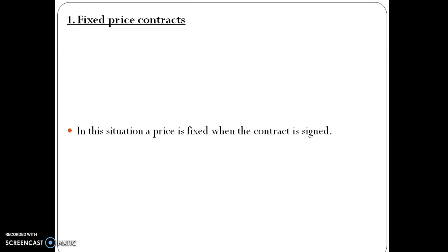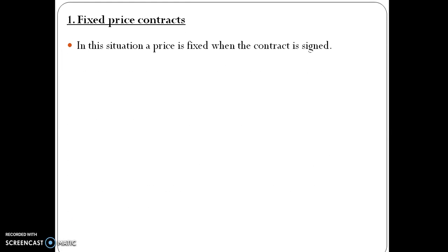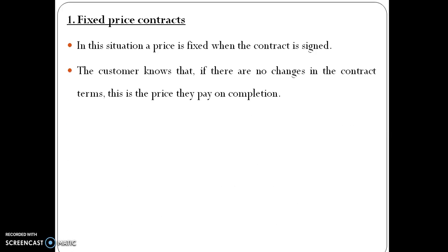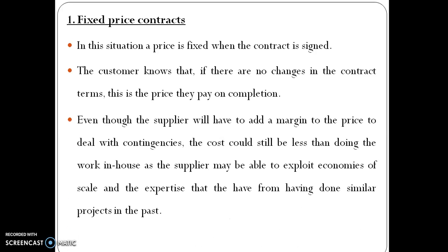In a fixed price contract, a price is fixed when the contract is signed. The customer knows that given no changes in contract terms, that is the price they pay on completion, even though the supplier will have to add a margin to the price to deal with contingencies.